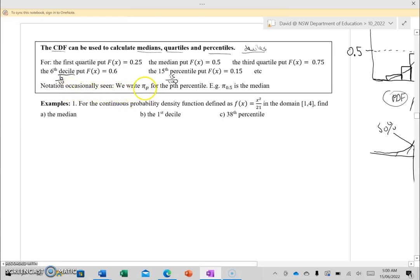Occasionally we see this notation with pi and then a number down the bottom to represent the percentile—I think because pi begins with P and percentile begins with P. Sometimes you see this notation, but it's reasonably rare. I'll show you the way that I write it when we do a question. For the continuous probability density function defined as f(x) = x²/21 in the domain 1 to 4, find the median, the first decile, and the 38th percentile. They've given us the PDF, so the first thing I'm going to do is work out the CDF.